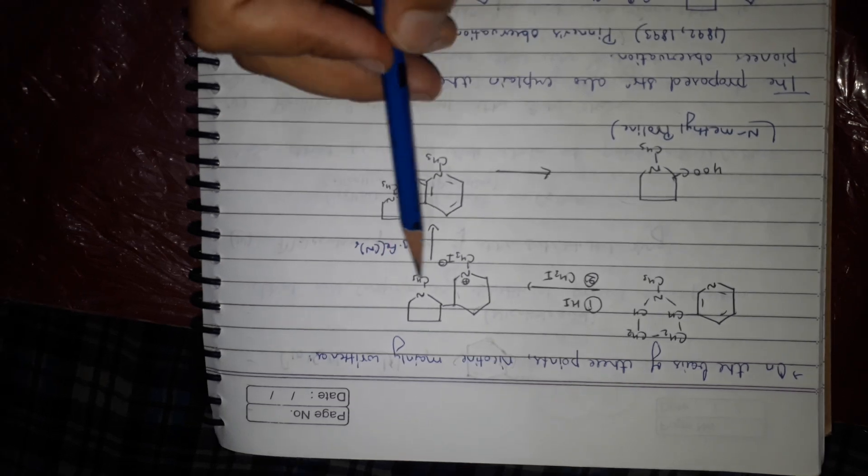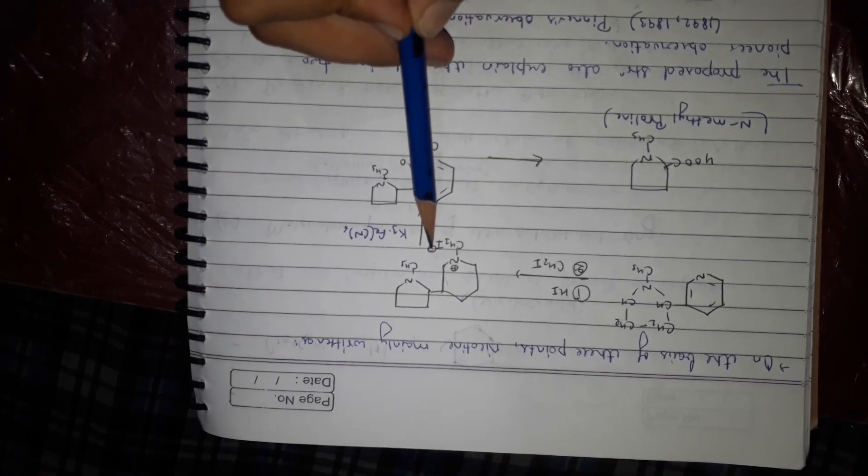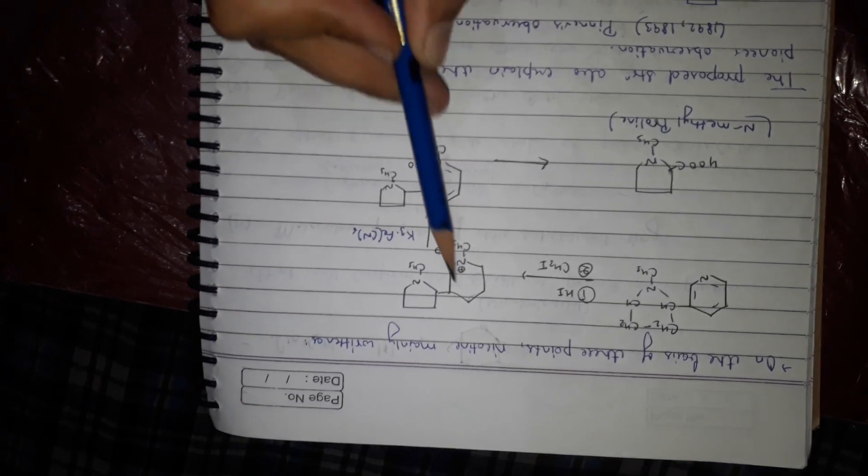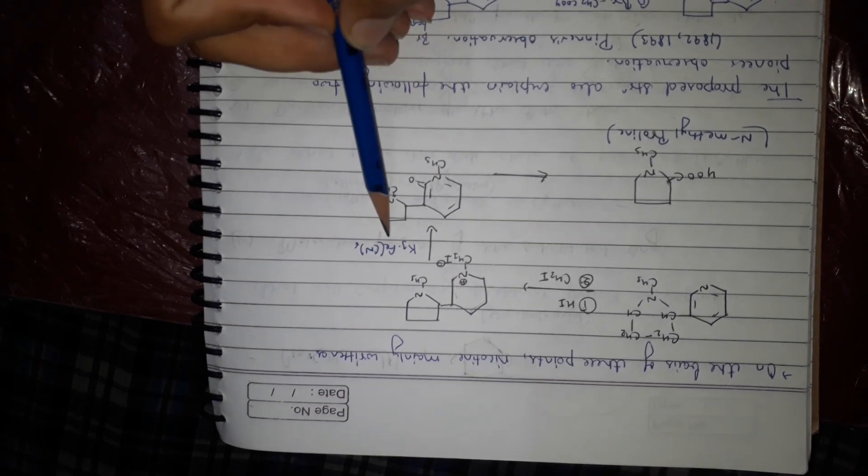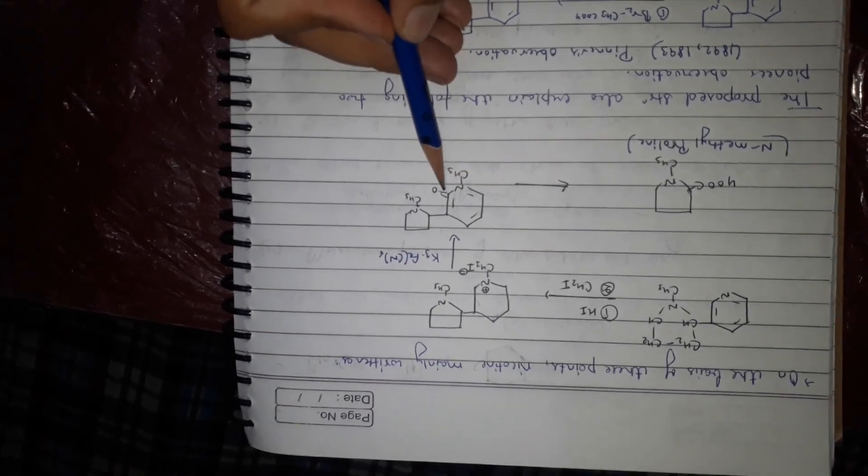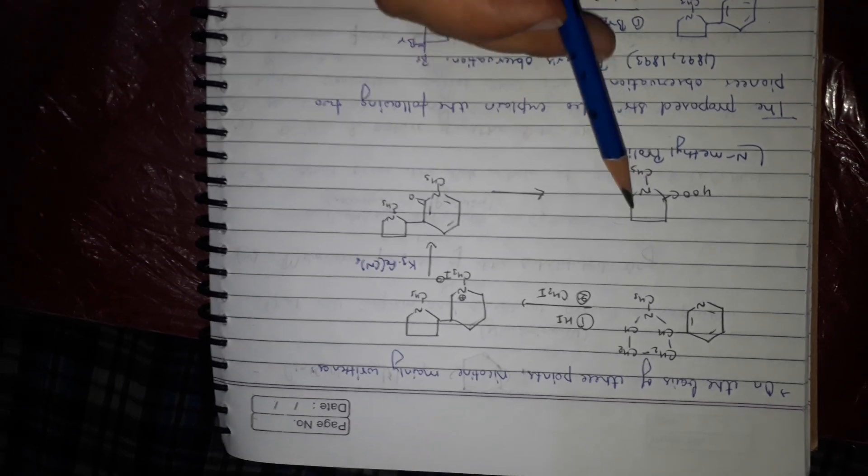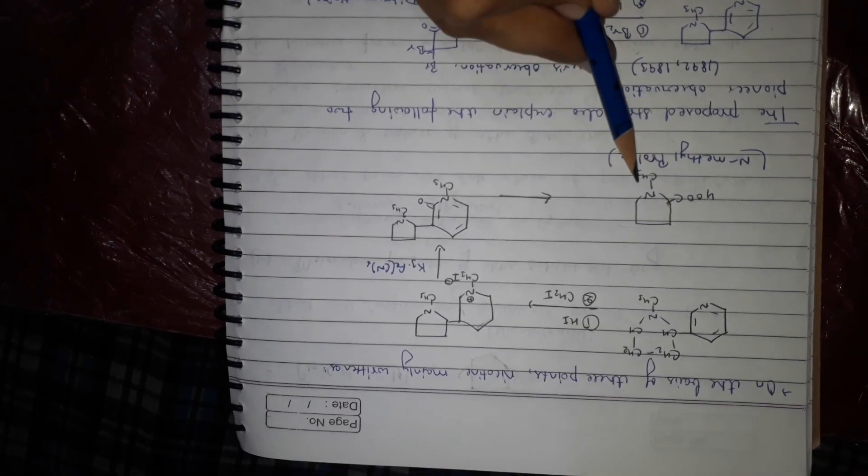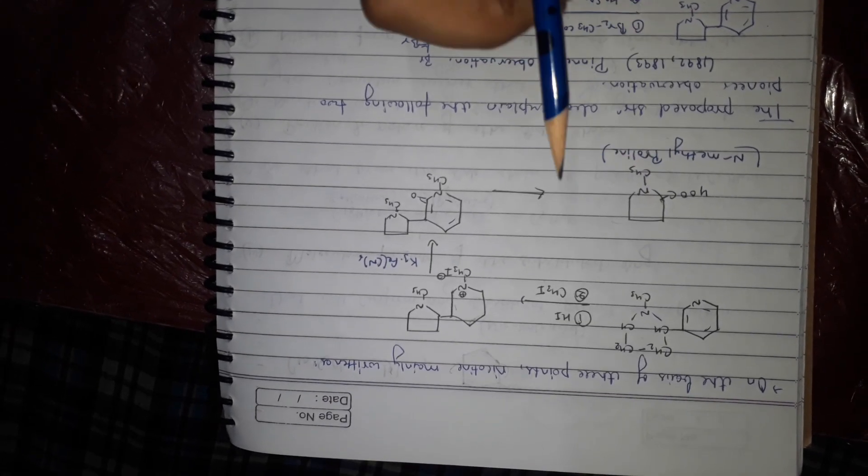On HI CH3I it becomes N positive, I negative. On K3Fe(CN)6 there's a bond present. On Cr2O3 it becomes a double bond on second position and yields N-methyl pyrrolein with COOH at that position.